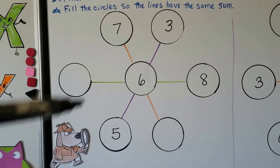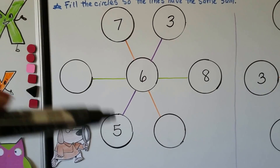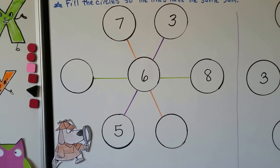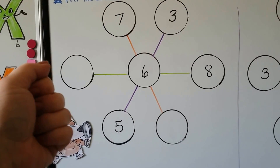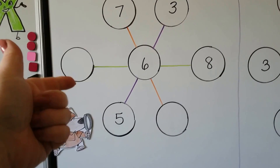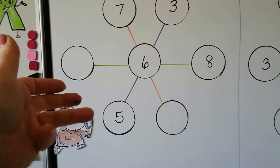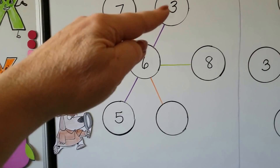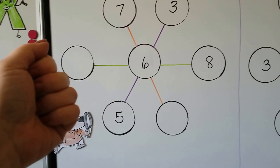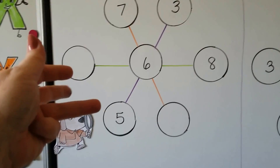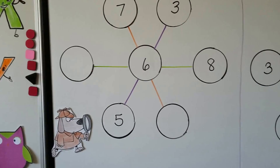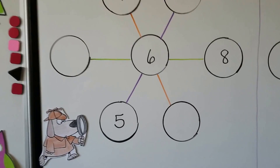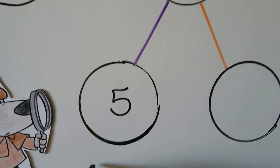We can start by adding 6 plus 5. Start with the larger addend 6 and count on 5: that gives us 11. Then we add the 3: 11, 12, 13, 14. So we know that each line is supposed to equal 14.